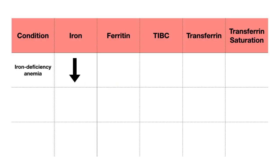Let's start with an iron deficiency state or iron deficiency anemia. This can occur from a variety of reasons, like a decreased intake of iron, such as you would see with a vegan or vegetarian diet. Menstruation or gastrointestinal losses can lead to blood or iron loss, and conditions like celiac disease or bariatric surgery can also cause decreased absorption of iron. So iron deficiency anemia can be caused by a myriad of things.